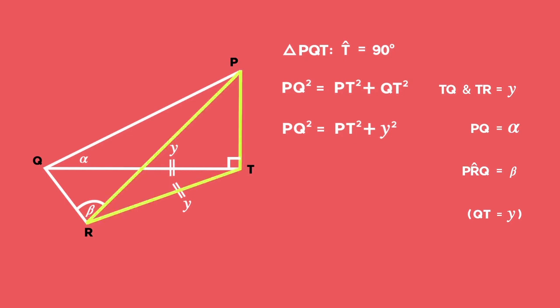Now let's find an expression for side PR. Working in triangle PTR and using Pythagoras once more, we find that PR squared equals PT squared plus RT squared. Therefore, substituting RT as Y, we can simplify to get PR squared equals PT squared plus Y squared. This is the same as the expression for PQ we worked out earlier, hence PQ is equal to PR.